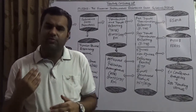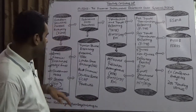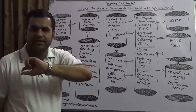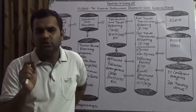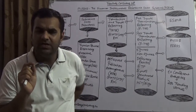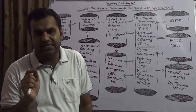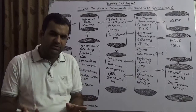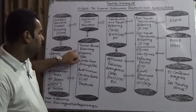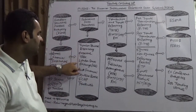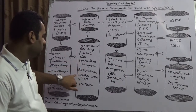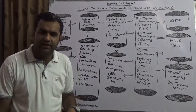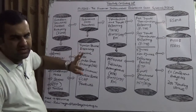ESMA has already approved almost 28 reference data providers as far as MIFID 2 is concerned. The few important ones I'm mentioning here are: Thomson Reuters, Bloomberg, Euroclear, Trax, LSE — London Stock Exchange — Abide Financial, Deutsche Boerse, ICAP, and TradeWeb. The list is pretty long. These are the few reference data providers which we have. The trades which flow from institutions to the data providers — the perspective is the reference data.